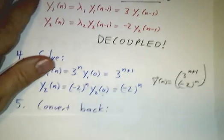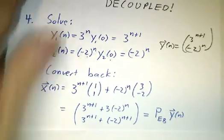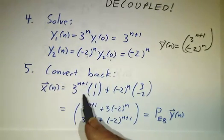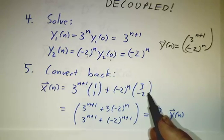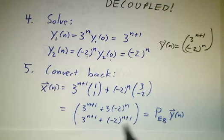Okay, finally we ride the down elevator. We say x at time n is the first coefficient times 1, 1 plus the second coefficient times 3, negative 2. And you work it out, and there it is.